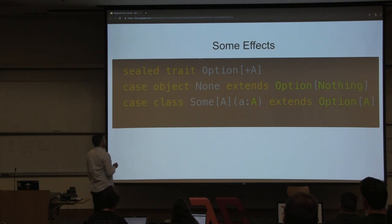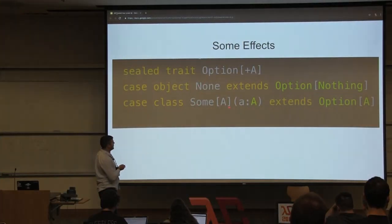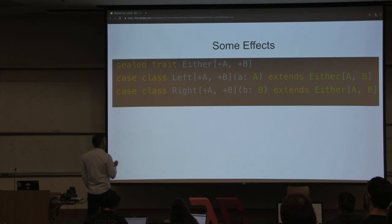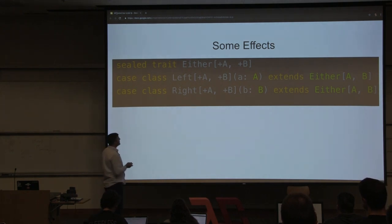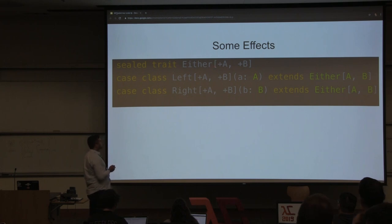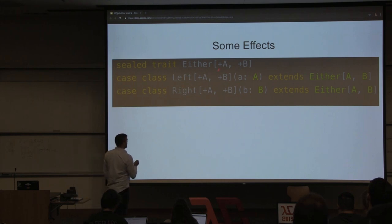Here is an example of an effect — the effect of nullability or absence. We have Option, which takes some type A and can be None or Some of A. What you want to focus on is this type parameter. Either is similar to Option but can be something and something else — two type parameters, with Left and Right as the two instances, so you can have an A here or a B.